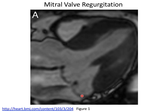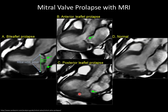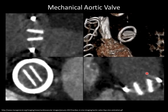Either the posterior or anterior leaflet may be prolapsed. On MR, normal leaflets have a characteristic appearance. MR is a very sensitive technique for detecting mitral valve disease; echo and CT are also good — all three are effective.